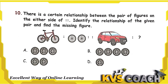The next question: there is a certain relationship between the pair of figures on either side. A cycle has two wheels, so a car has four wheels. Option B is the right answer.